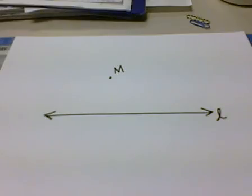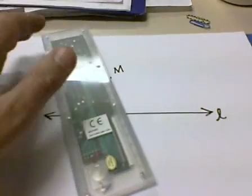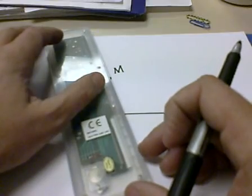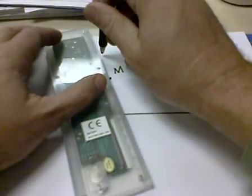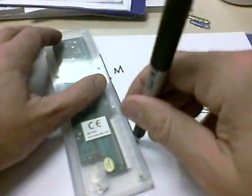So the first thing we want to do is draw a transversal, or a line through point M, that passes through line L. This will be the transversal once we make our parallel lines.